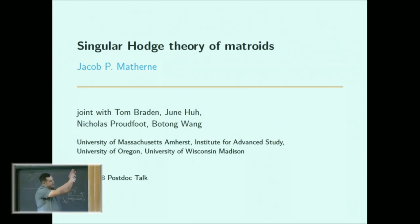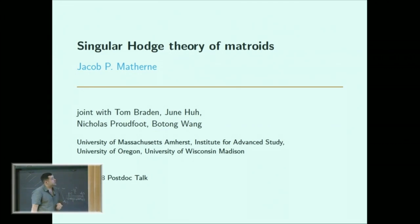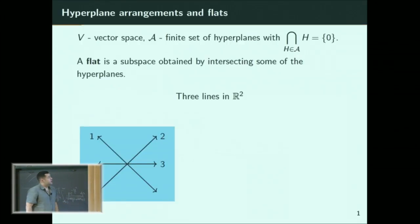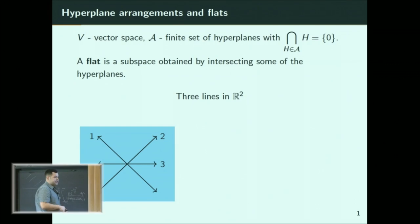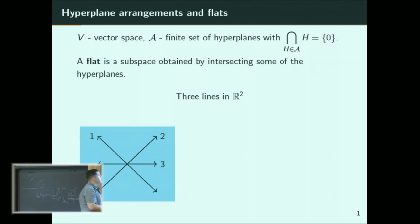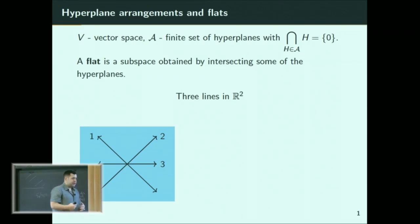So this title has all kinds of words in it, but let's start very simple. I want to start with a vector space and have a finite collection of hyperplanes inside this vector space so that the intersection of all of these hyperplanes is the origin, the zero vector. A flat is going to be a subspace that I get by intersecting some collection of my hyperplanes.